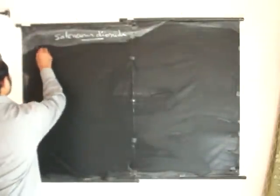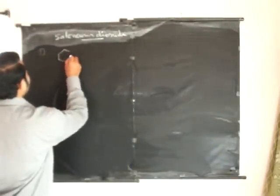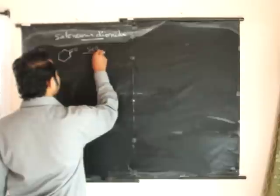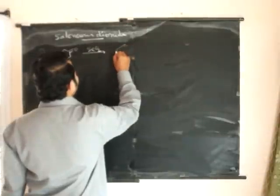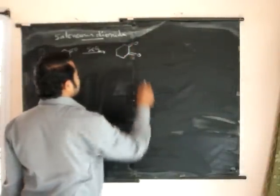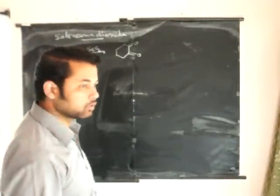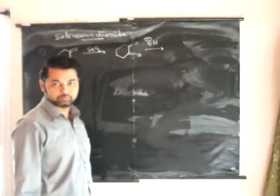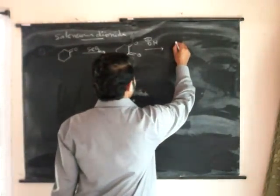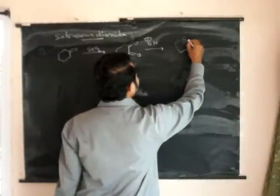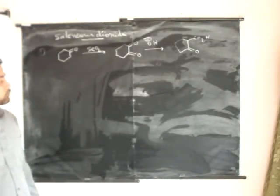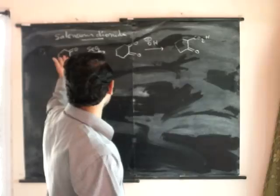First example: suppose if we have cyclohexanone and if we treat cyclohexanone with selenium dioxide, then it will generate a diketo compound. If we hydrolyze with OH-, this is like a benzil, so this will undergo ring contraction to give an alpha-keto acid.